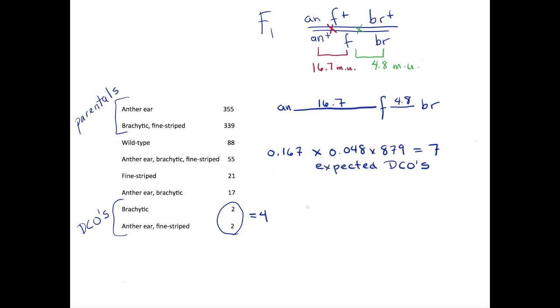The coefficient of coincidence, C, is defined as the observed number of double crossovers divided by the expected number. There were 4 observed double crossovers, and we expected to see 7. The coefficient of coincidence is then 4 divided by 7, or 0.57.